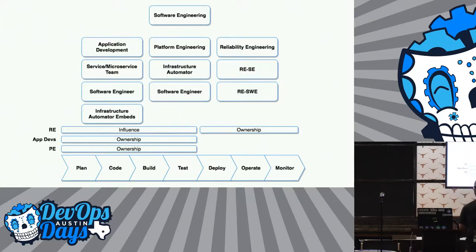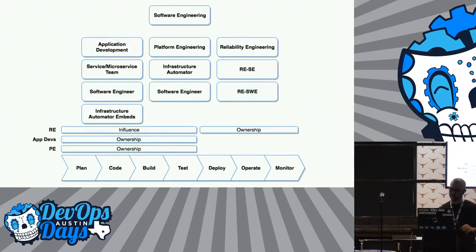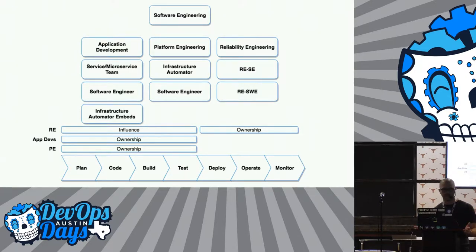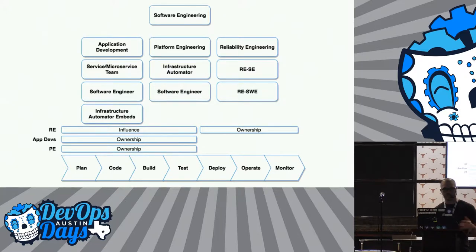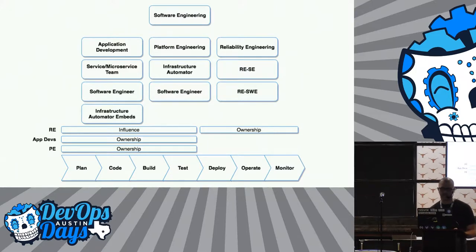Anything that went to production - that initial version going into production - was going to be owned by reliability engineering. In a large organization, if I ship version 1.1 and reliability engineering is charged with owning that, at that point reliability engineering can actually make fundamental changes to my code. Where that becomes powerful is that ultimately reliability engineering is actually empowered to own reliability. They're not the sole organization responsible for it, but they're empowering that kind of responsibility within the organization.